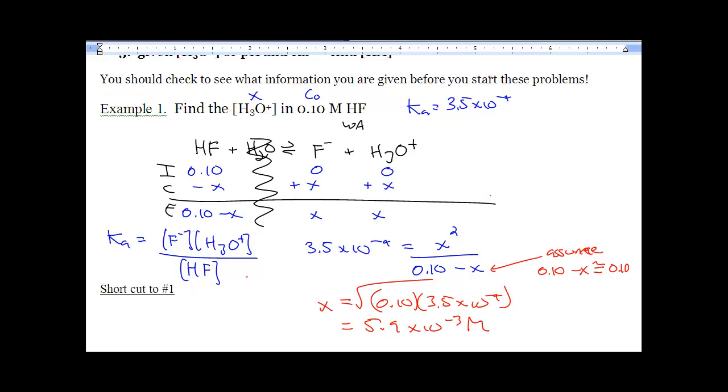That's it folks. That's a Ka question for a weak acid. We now know the concentration of H3O+. Sometimes we'll have to go one step further and convert it into pH but we're not going to do that here. We'll do that tomorrow in class.